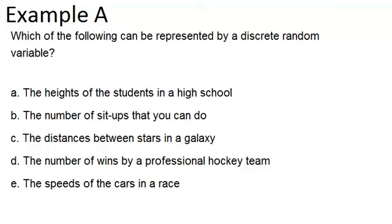And then we have five different possible discrete random variables. The first one, A, is the heights of the students in a high school. So this would not be a discrete random variable because there are an infinite number of heights that students could have. To be discrete means that you should be able to list out all of the possible values for the variable. So the heights of students is a variable, it's just not discrete.